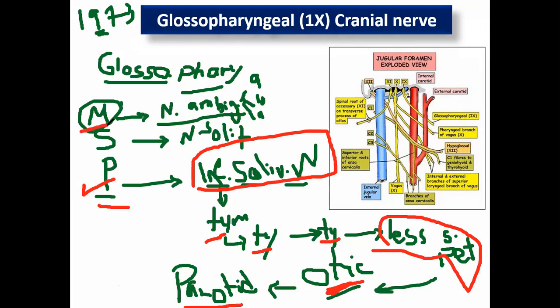Regarding the motor supply: the glossopharyngeal supplies only one muscle — stylopharyngeus. Just one muscle of the pharynx, named stylopharyngeus. This is important to remember.